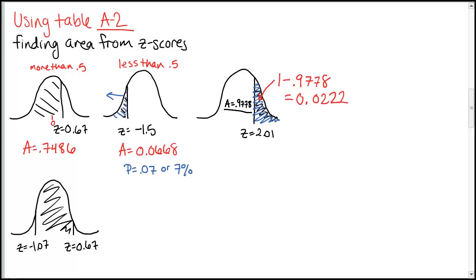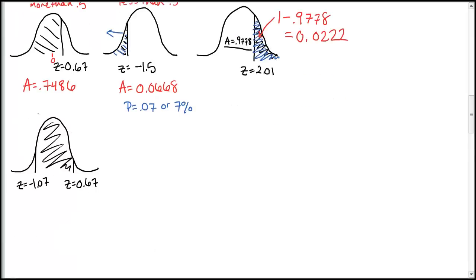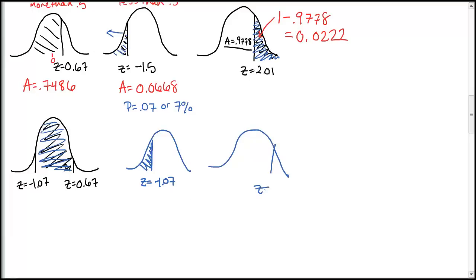Remember you'll have to do this every time you want an area to the right — the table always gives you something on the left-hand side. Last piece: here we're looking for an area between two z-scores. We can only look them up one at a time. Looking up z equals negative 1.07 gives the small area on the left, and looking up z equals 0.67 gives the larger area. If we want the area in between, we take the bigger area and subtract the smaller area.